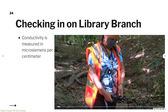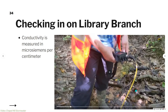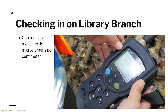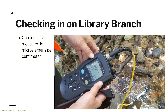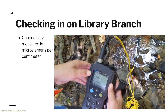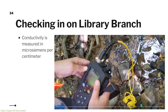Electrical conductivity is measured in microsiemens per centimeter. This is conductivity — this is 177.1 microsiemens per centimeter. So on this day, the Library Branch got a reading of 177.1. Typically in Chapel Hill, the normal ranges for conductivity are between 100 and 300. 500 or more tells us there may be a pollution source nearby, and 1,000 or more is a big indicator.